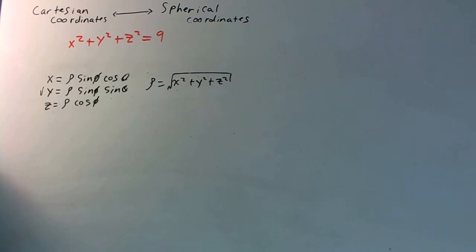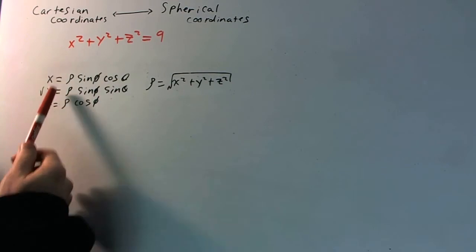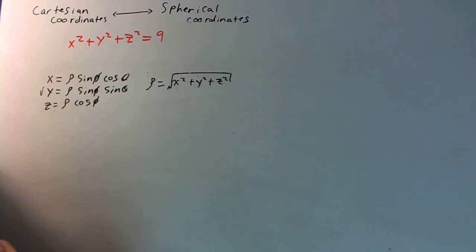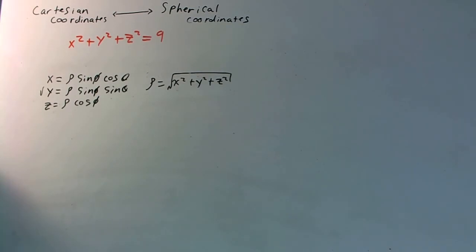So basically, we know what x is, we know what y is, we know what z is in terms of spherical coordinates. So what we can do is actually plug those values in, simplify, and hopefully it turns out to something really nice, and we can get a really nice answer. So let's do that.